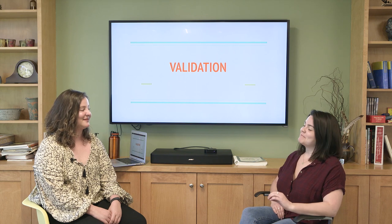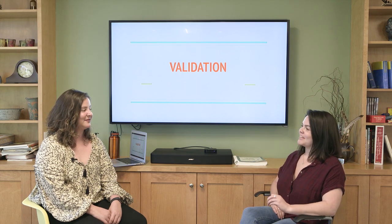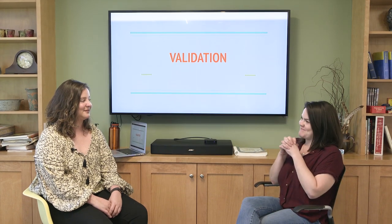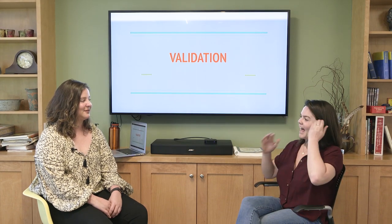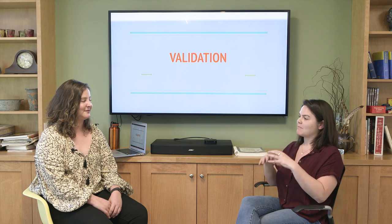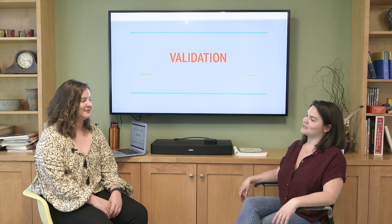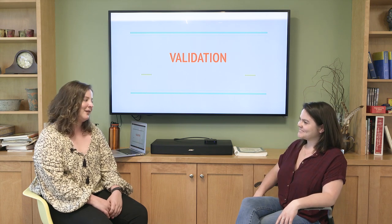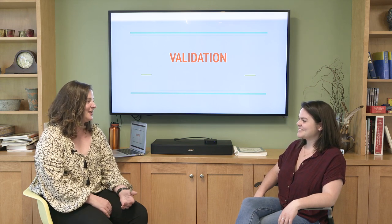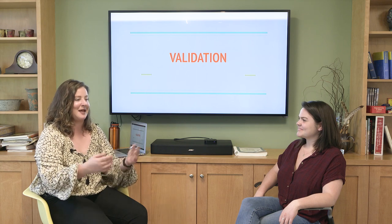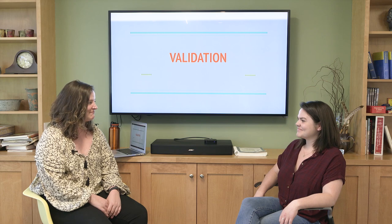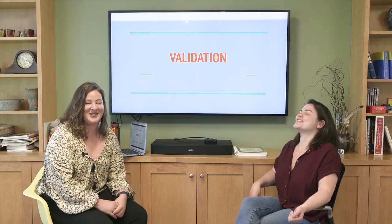Now we're going to model some invalidation and some validation. [Invalidation example] 'I've had to repack my dishwasher every single time my roommate puts anything in it for the last two weeks because she's not using the right amount of space, and I have to realign everything to maximize space and not increase our water bill.' — 'Really? Is that that big of a deal? I don't even have a dishwasher. Can't you just accept that your roommate's not good at packing the dishwasher and just clean your dishes?' — That would be invalidation.